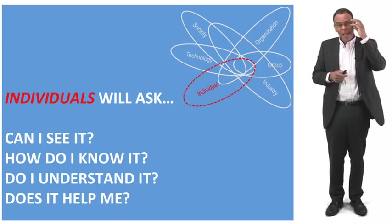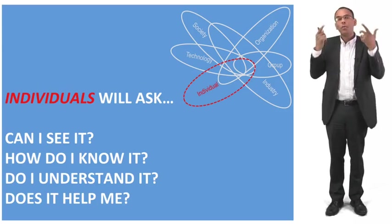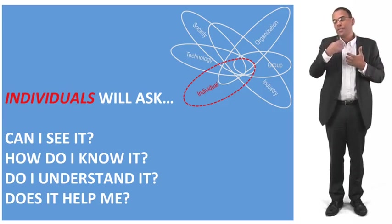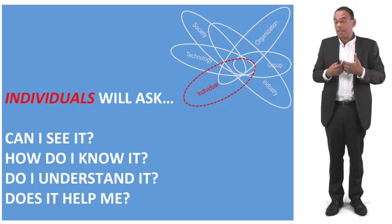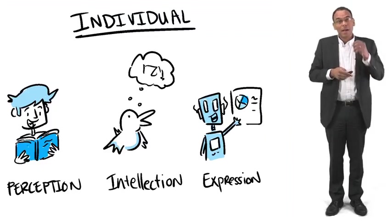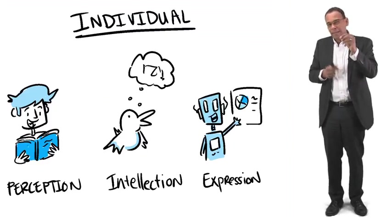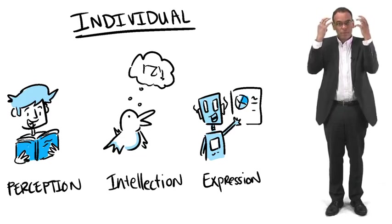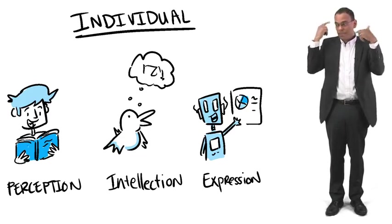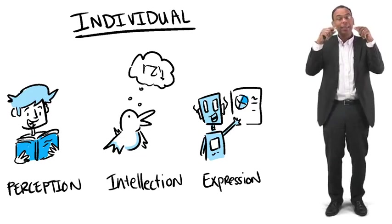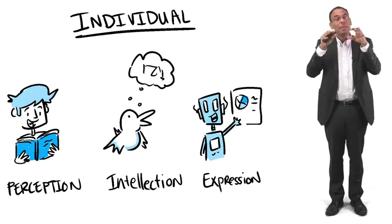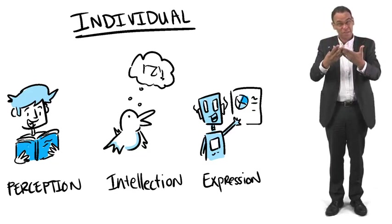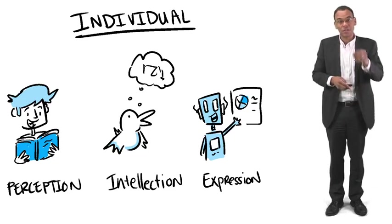At the individual level we're going to talk about how we see things, how we know things, how we understand things, and how things may help us. The model we're going to use is a model of perception. If I want to be creative, I need to get new information in — ideas come from the stuff that's out there. We're going to talk about different ways of thinking about things, which is intellection. And then we're going to talk about expression — getting our ideas back out — because you can have great ideas, but if they're stuck in your head they do no good to anyone. These three things are the ways of overcoming individual innovation constraints.